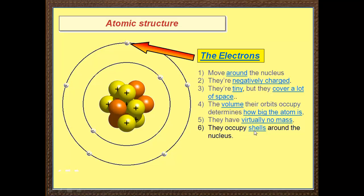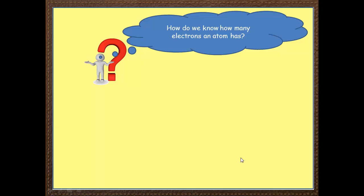And it occupies shells around the nucleus. Now these shells, sometimes in some books, they're referred to as orbits. In other books, they're energy levels or shells, all one and the same thing.